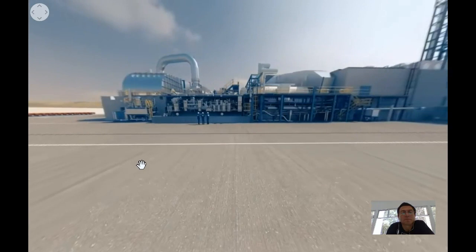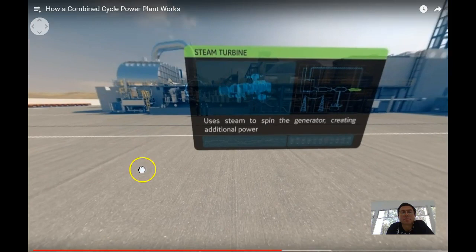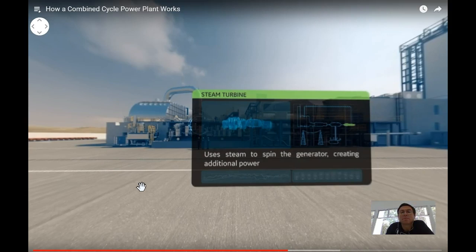Here we are, the steam turbine. This piece of equipment uses steam to spin the generator, similar to the gas turbine. The high temperature and pressure steam passes through the steam turbine blades, turning the generator to make more electricity.